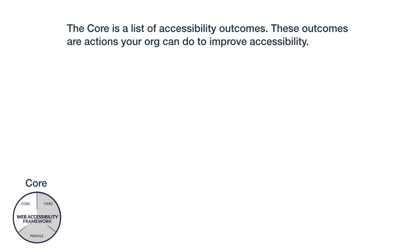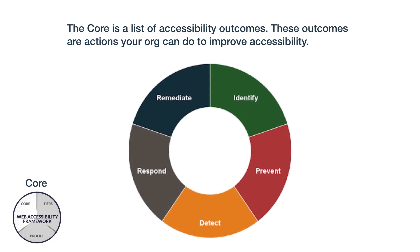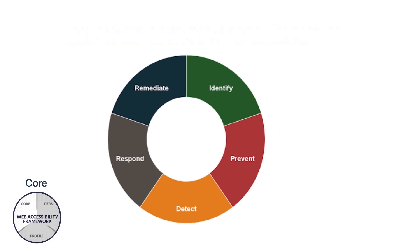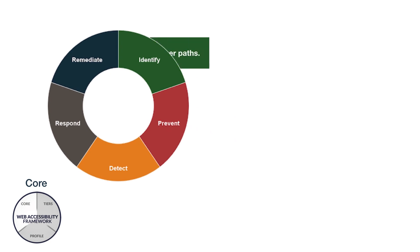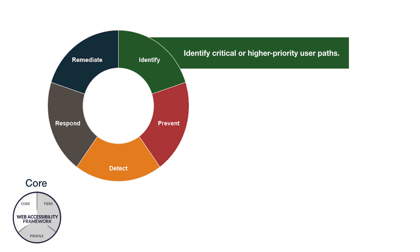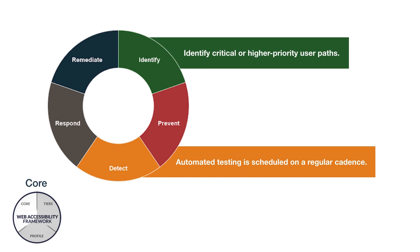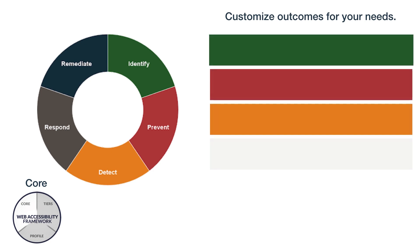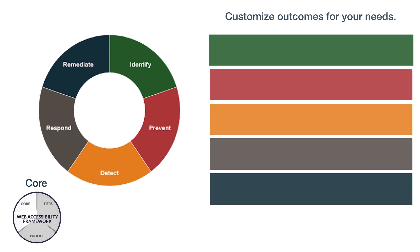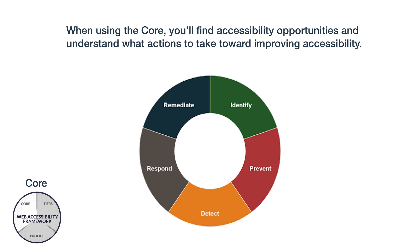The core is a list of accessibility outcomes — actions your organization can do to improve accessibility. The outcomes are organized into five different functions: identify, prevent, detect, respond, and remediate. Here are two examples: one outcome from identify is 'identify critical or higher priority user paths,' and an outcome from detect is 'automated testing is scheduled on a regular cadence.' Your organization customizes the list of outcomes for its needs. When using the core, you'll find accessibility opportunities and understand what actions to take toward improving accessibility.